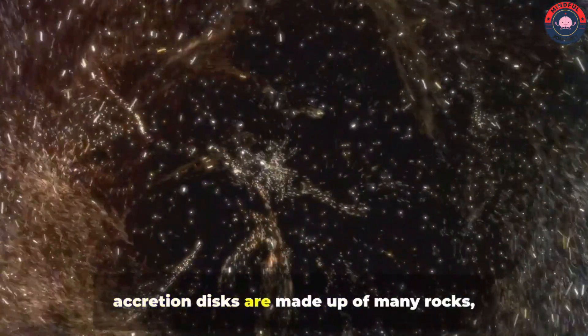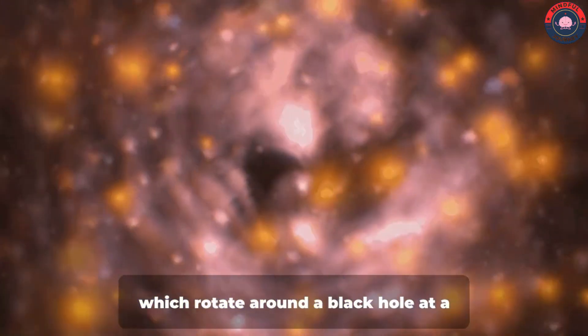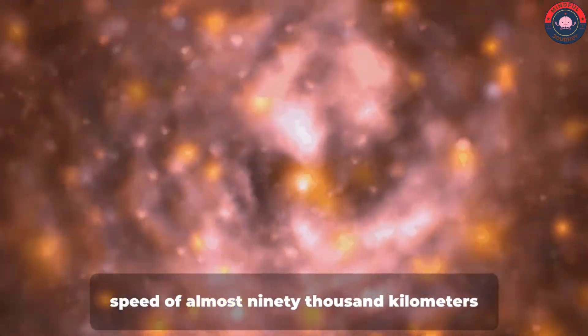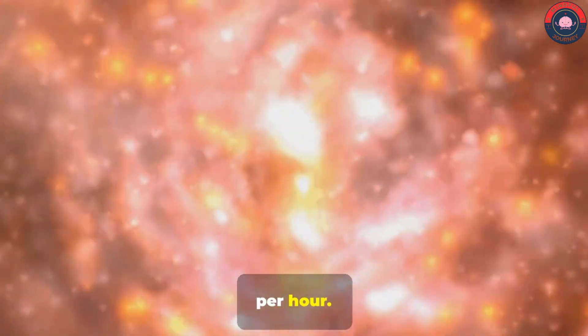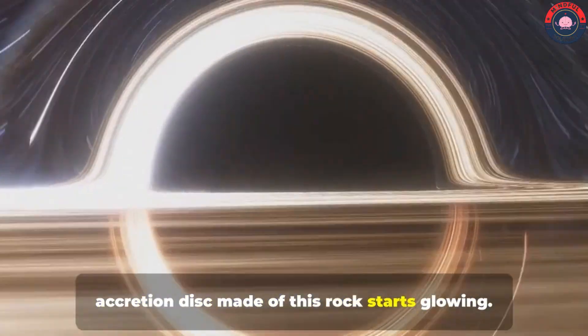Now, as we all know, accretion disks are made up of many rocks, dusts and gases, which rotate around a black hole at a speed of almost 90,000 km per hour. Due to which heat is produced, and the accretion disk made of this rock starts glowing.